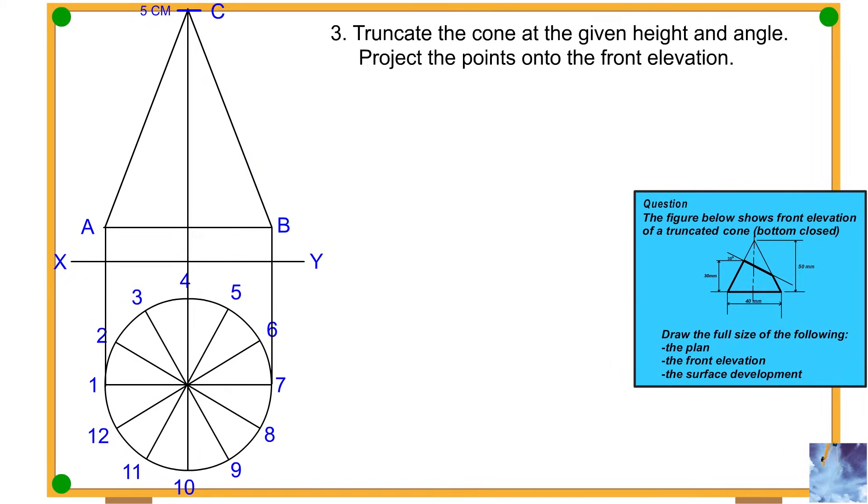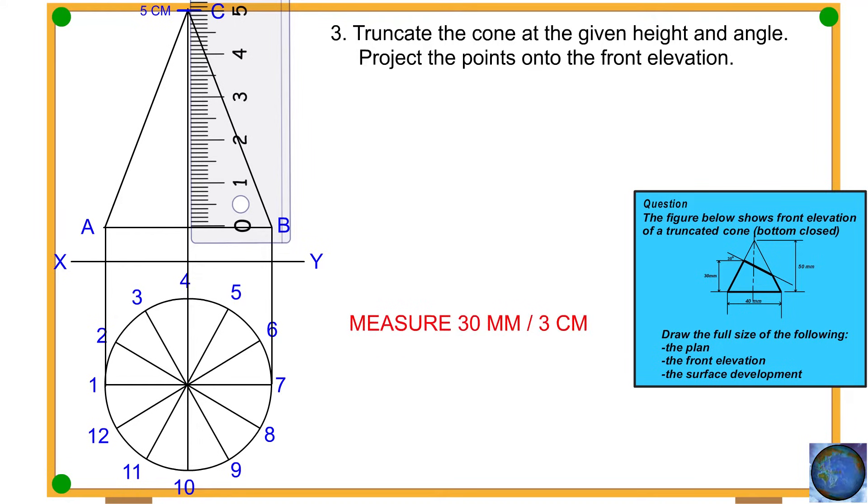Procedure 3: Truncate the cone at the given height and angle. Project the points onto the front elevation. Measure 30 millimeters.